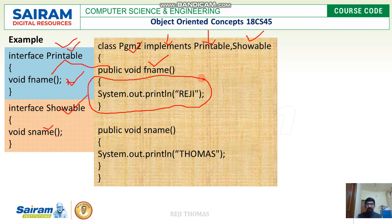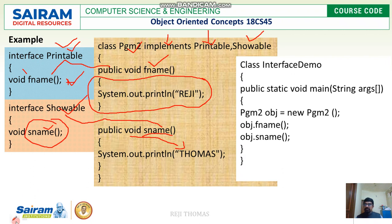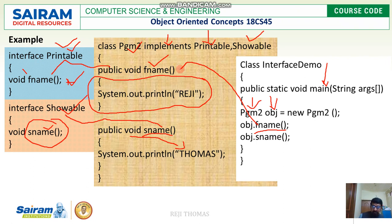fname stands for first name. Now look at the second method called sname — this is inside the second interface called showable, without any definition or body. I am going to implement this method to print the second name. In the main class, I have created an object of the class pgm2, and using this object I call the method fname, which is going to print the first name: regi.